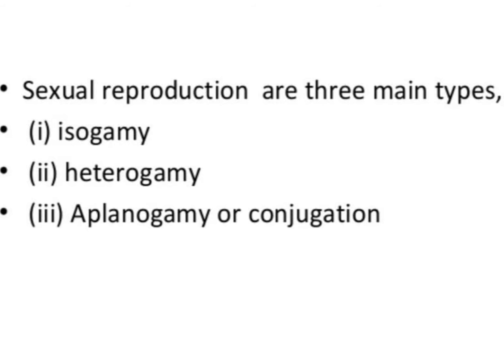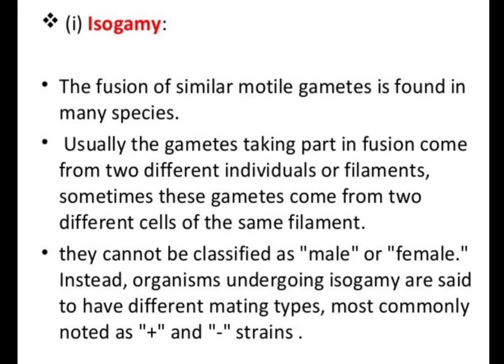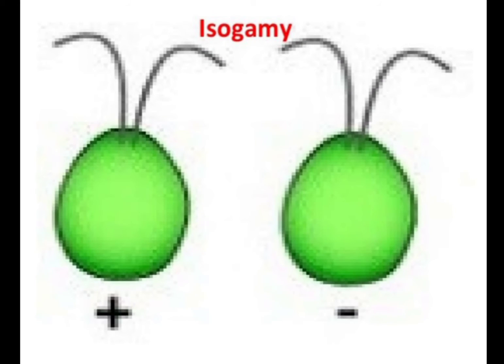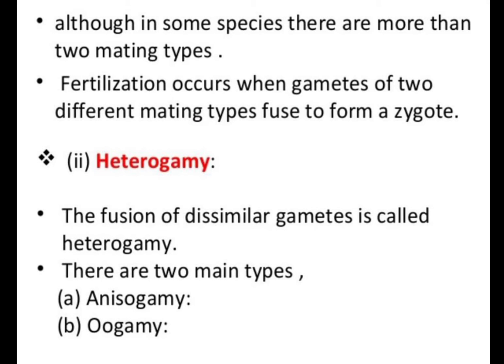Sexual reproduction is of three main types: isogamy, anisogamy, and oogamy (or conjugation). Isogamy is the fusion of similar motile gametes, found in many species. The gametes taking part in fusion come from two different individuals or filaments, sometimes from two different cells of the same filament. They cannot be classified as male or female; instead, organisms undergoing isogamy are said to have different mating types, most commonly called plus or minus strains. Fertilization occurs when gametes of two different mating types fuse to form a zygote.